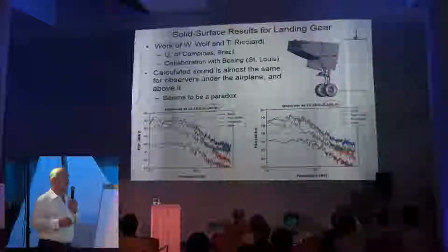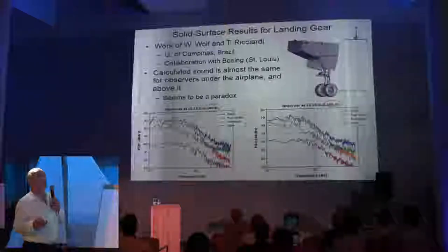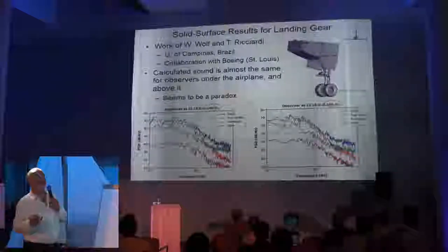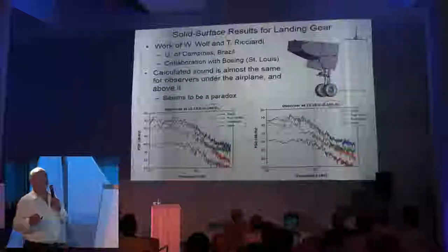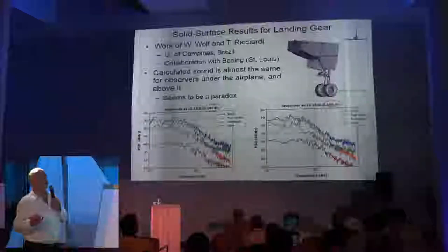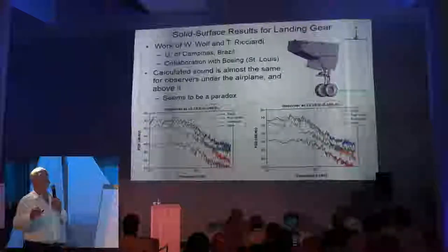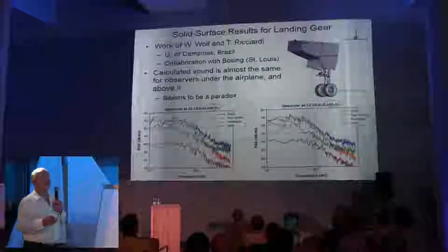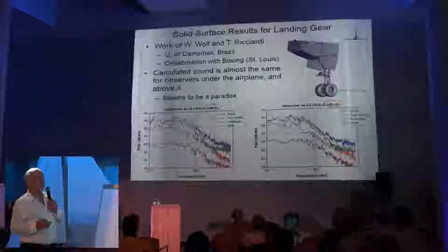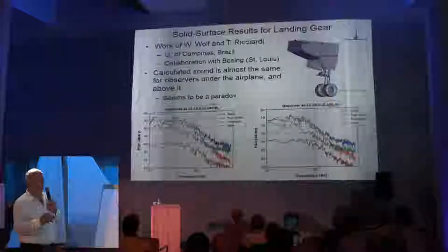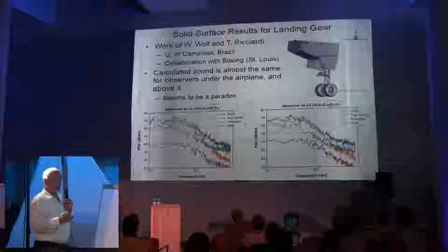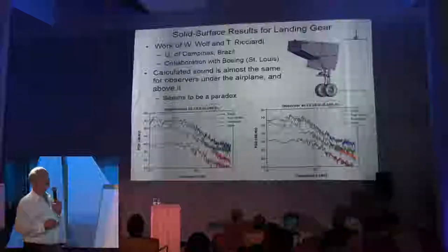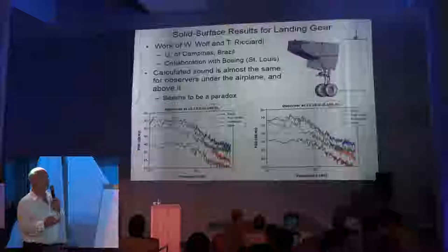If you look at the cavity — it's like a shoe box — you have pressure fluctuations on the surface and you apply the Ffowcs Williams–Hawkings formula. It doesn't know whether the air is inside the shoe box and moving around, or outside the shoe box and radiating sound. That's a simple way to explain why the solid surface formula can basically miss the directivity of the sound. This is a paradox that's starting to alert us that something's probably wrong with solid surface calculations.